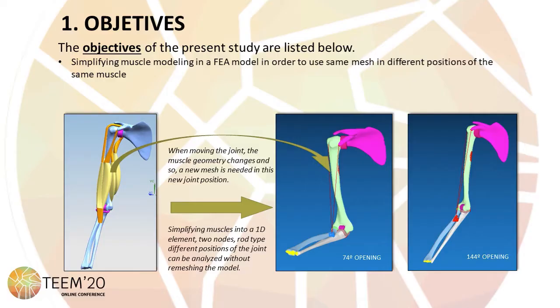The main objective of this study is to find a simplified way of modeling muscles within a human joint, so that the same finite element model can be used to carry out analysis of the joint in different positions.